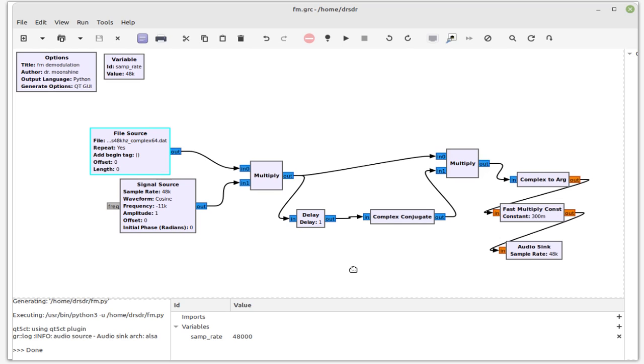So that is how you can demodulate FM signals in IQ space. Most software defined radio, you just click the button on the GUI and say you want FM and it does this. But I figured I'll show you the exact details of what's going on under the hood.